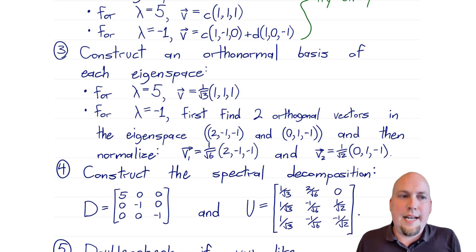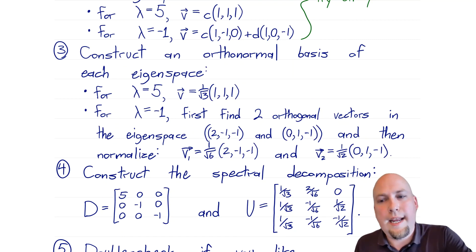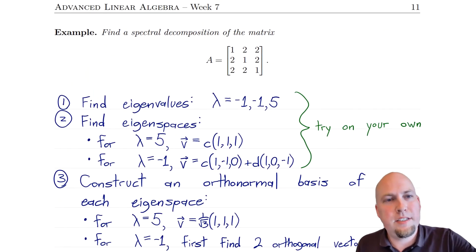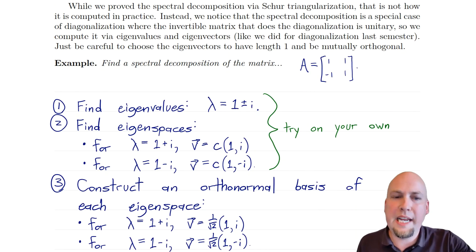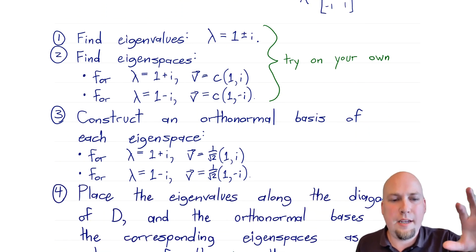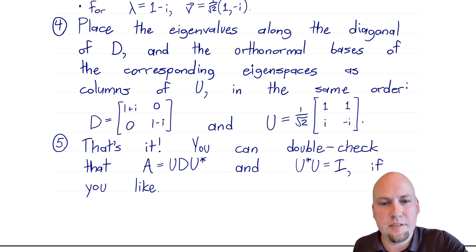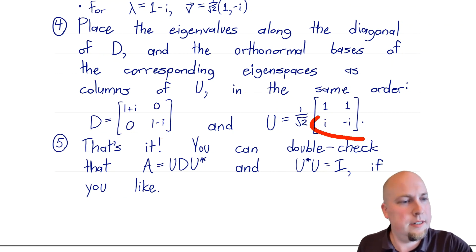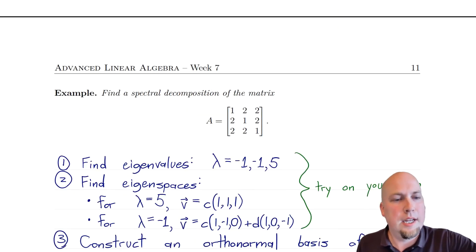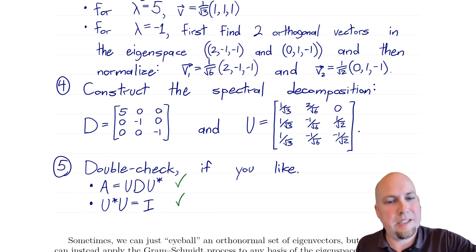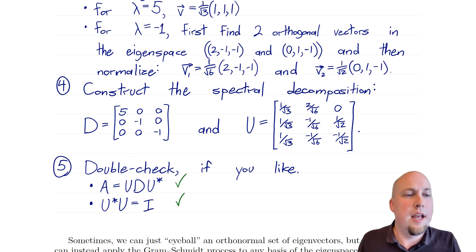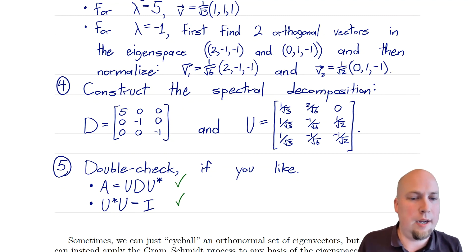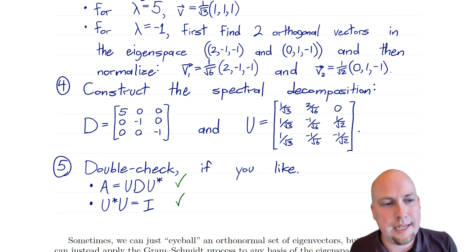That'll do it for today's class. Next class, we'll answer the question of what was different between these two examples. In the first two-by-two example, we had a real matrix but its spectral decomposition had complex entries, whereas in the second example the real matrix had a spectral decomposition consisting entirely of real numbers. So which real matrices actually have real spectral decompositions? That's the question we'll answer next class.